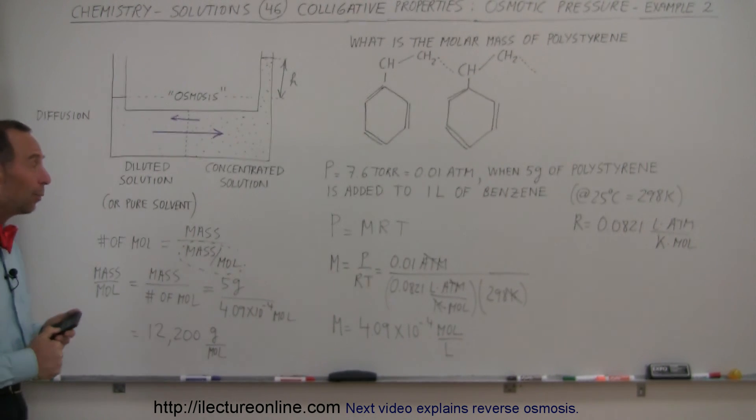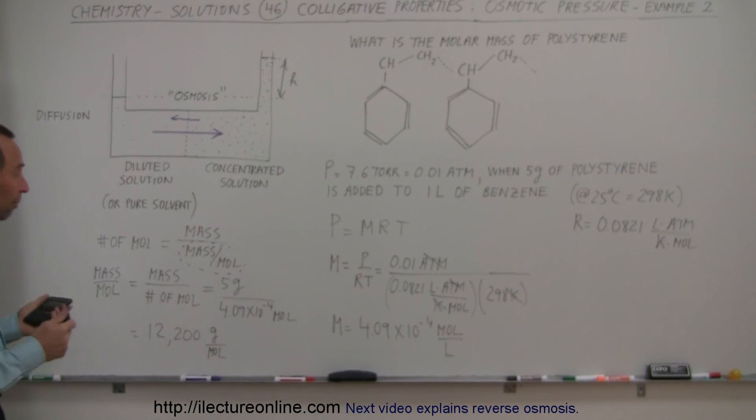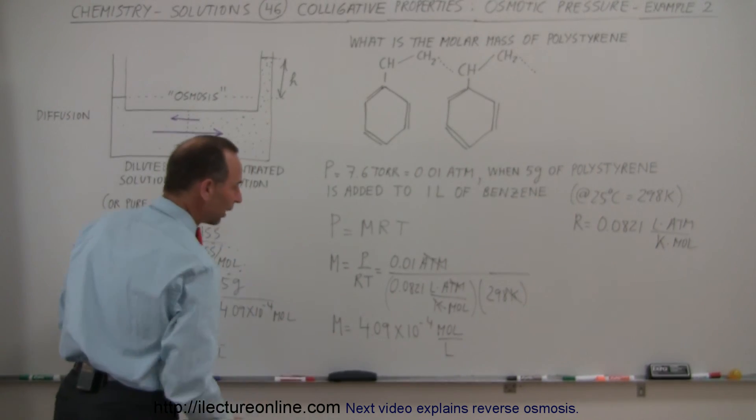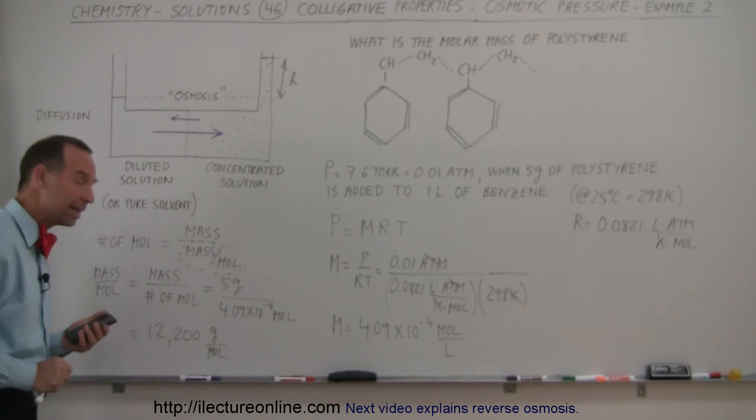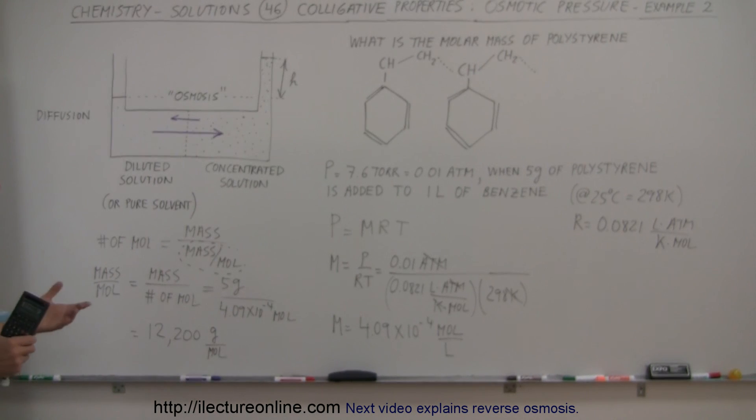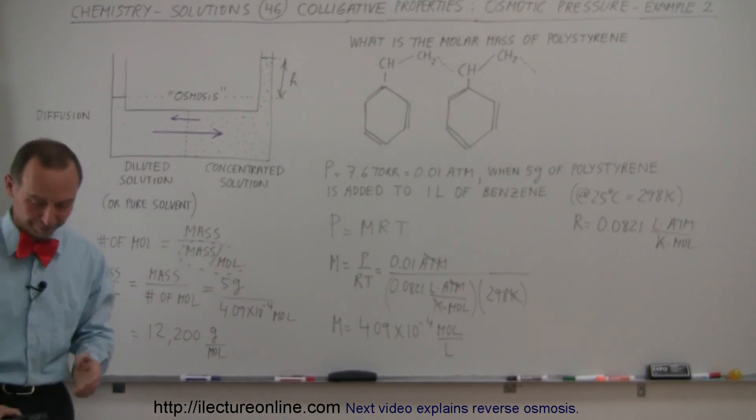So, that's a very handy way to figure out the molar mass of a substance if we really don't know what we're dealing with. So, all we do is we add it to a solvent, we measure the osmotic pressure, from that we find the molarity, and from the molarity we find the molar mass, or mass per mole. So, that's pretty tricky, pretty interesting, very useful, and another great example of how we can use osmotic pressure.